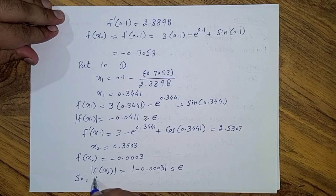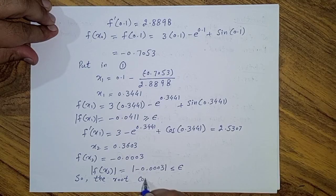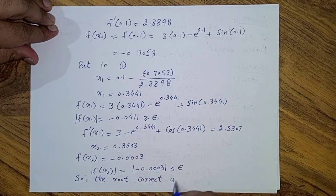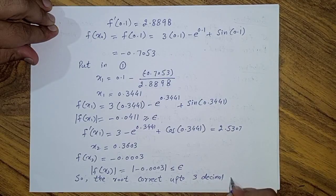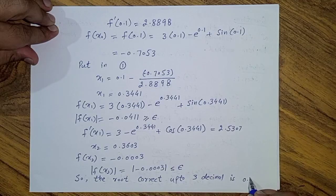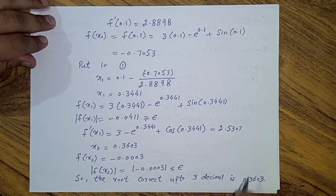Therefore, the real root correct to three decimal places is x = 0.3603. Thank you.